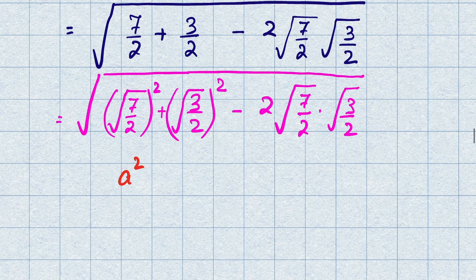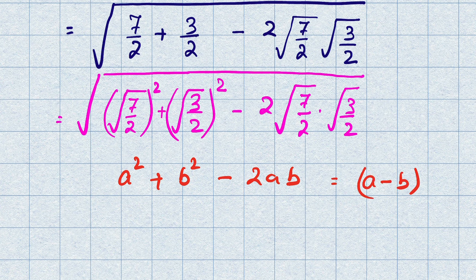This is in the form of A² plus B² minus 2AB, which is an algebraic expression equal to (A minus B) whole square.